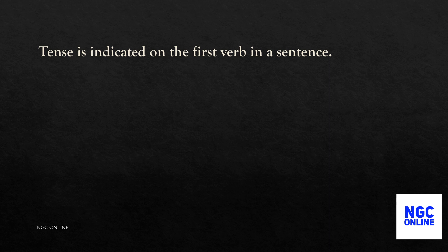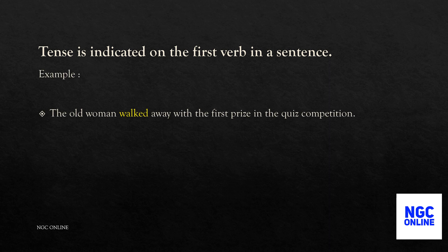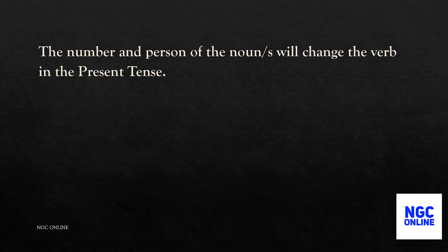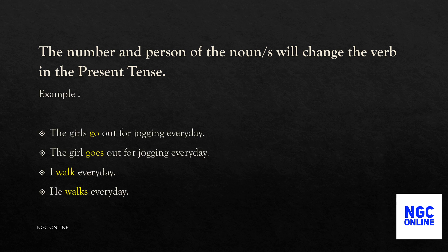Tense is indicated on the first verb in a sentence. For example, 'The old woman walked away with the first prize in the quiz competition' — here 'walked' is the verb. Another example: 'She will be singing again tomorrow' — here 'will be singing' is the verb. The number and person of the noun changes the verb in the present tense: 'The girls go out for jogging every day' versus 'The girl goes out for jogging every day.'